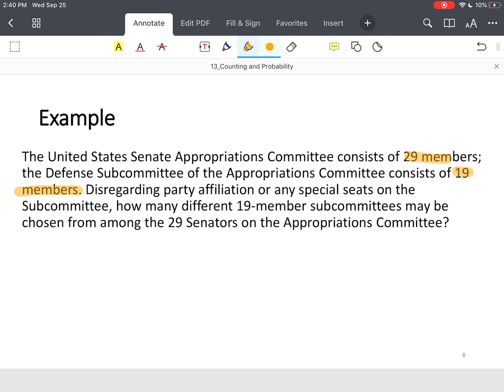Disregarding party affiliation or any special seats, how many different 19 member subcommittees may be chosen from among the 29 senators on the Appropriations Committee? So the first thing we need to do is ask ourselves, does order matter? Which means are we arranging these senators in the particular seats? And the answer is no. And since order doesn't matter, we're going to do a combination.